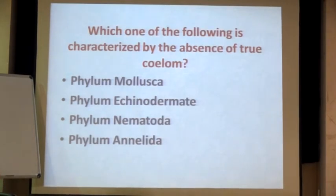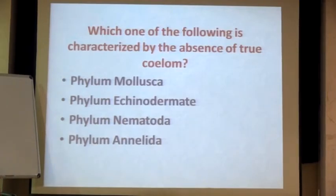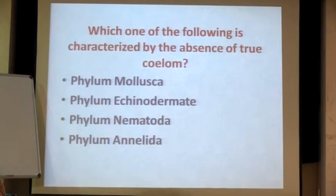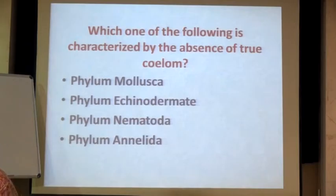Another question: which one is characterized by the absence of true coelom? You have the chart — look into it and tell me. Nematoda. I told you that acoelomates might not always be written as acoelomates — they might also be labeled as phylum Nematoda. You need to know that nematoda is the group of roundworms. Roundworms belong to nematodes, and flatworms belong to platyhelminthes.